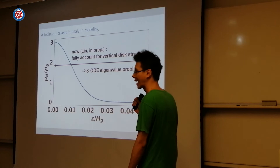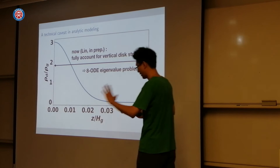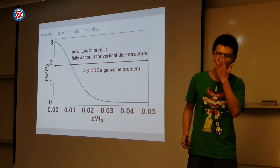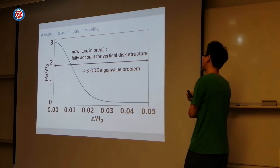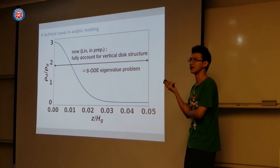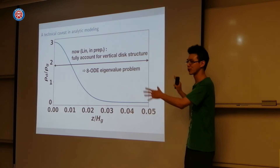What I am working on now, since last October, is to generalize this analysis to account for the full vertical disk structure. By relaxing this one assumption — which is a major one — the system becomes much more technically challenging, because you turn an algebraic problem into an ODE problem: an 8th-order ODE boundary value eigenvalue problem, which is highly technical. I actually got stuck on this for about three months and had to go to the math department for help. Even though the person I spoke to didn't solve my problem directly, he gave me ideas that eventually led to an acceptable solution. Interacting with the mathematics department is something we should definitely explore more.